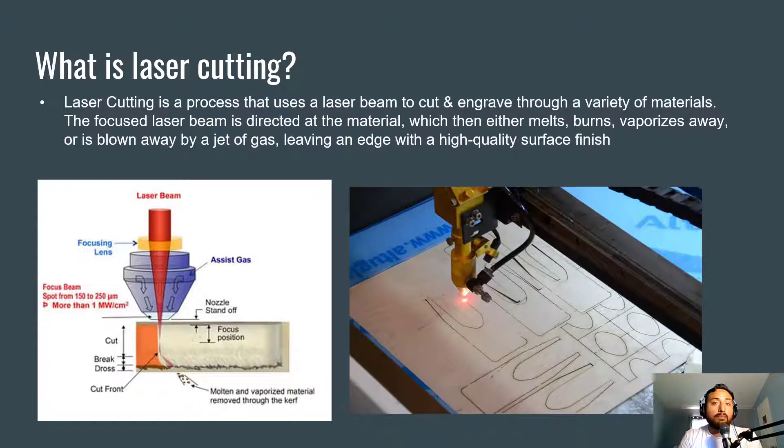Those are some of the very popular materials you can use in a laser cutter. Moving forward, the focused laser beam, as you can see in the picture here on the right, is directed at the material, which then either melts, burns, vaporizes away, or is blown away by a jet of gas, leaving an edge with a high-quality surface finish.